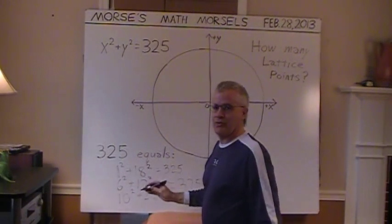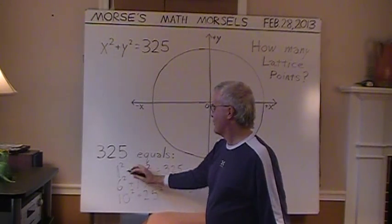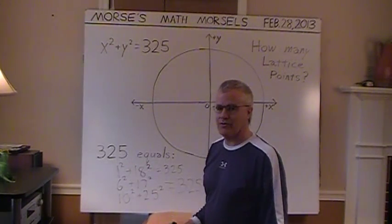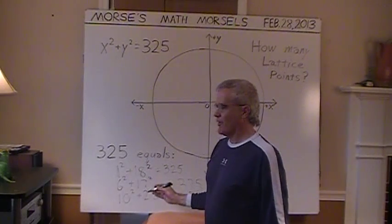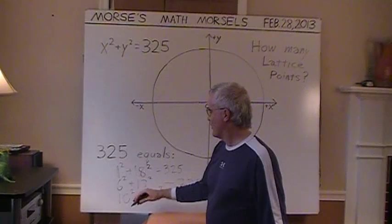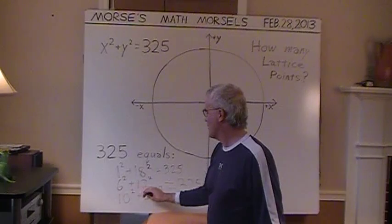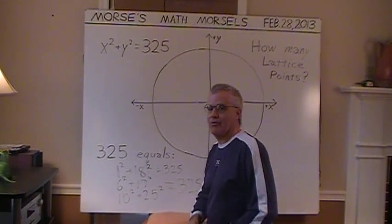So we have three ways that 325 can be expressed as a sum of squares. And any of these numbers could be negative as well as positive. Because negative 18 squared is still 324, and when you add the 1 to it, or negative 6 squared plus 17 squared, that's 325. Or 10 squared plus a negative 25 squared would be 325.